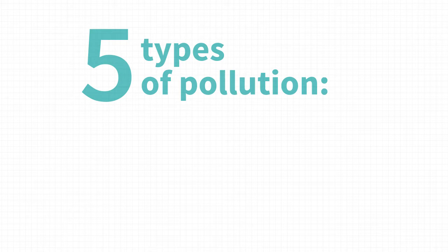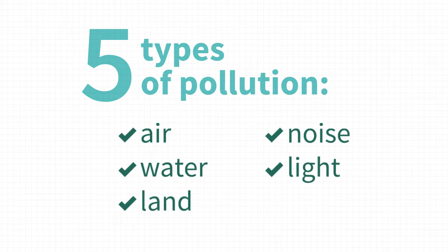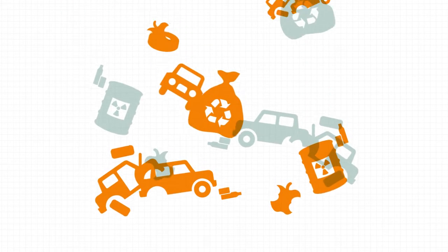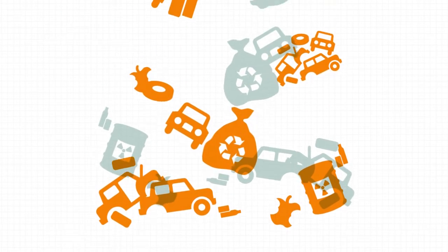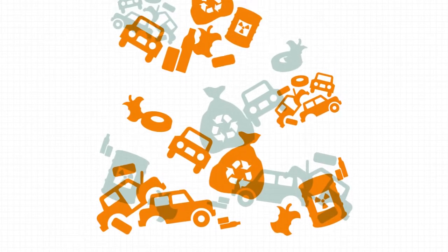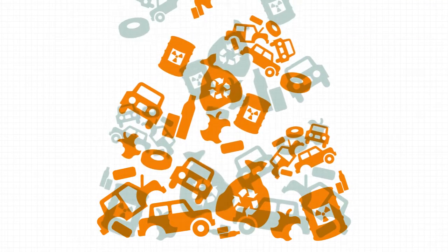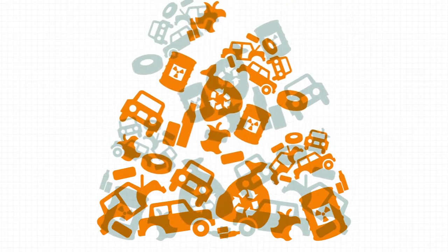How does pollution affect the environment? Well, it depends on what is being polluted. Most pollutants come from industrial activity, oil production, transport and logistics. Fumes from vehicles and smoke from factories are responsible for high emissions of CO2 and other greenhouse gases.